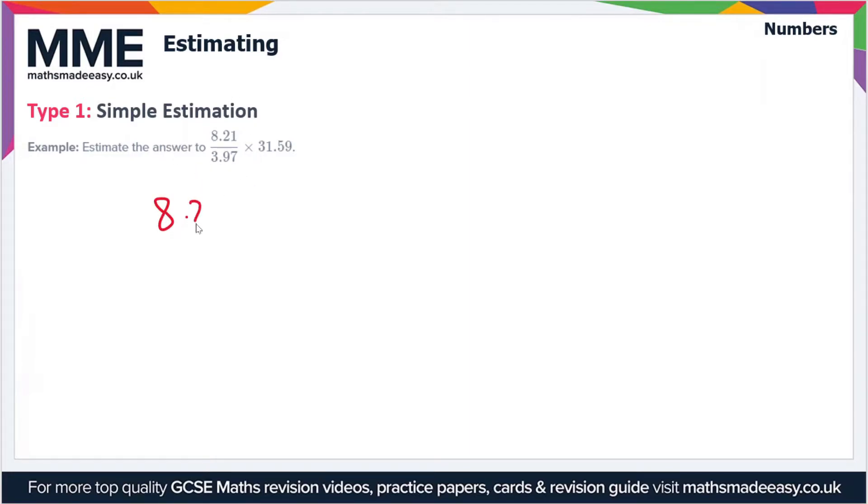So first of all, 8.21 over 3.97 times 31.59. We're going to round each of these numbers to something that's more easy to work with. We're going to round everything to one significant figure here. So 8.21 is just going to become 8, 3.97 is just going to become 4.